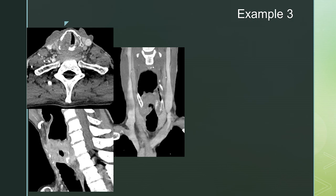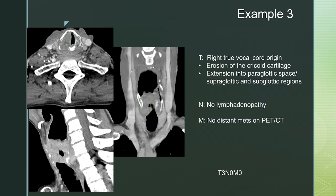Example three is a less subtle lesion. There is a right true vocal cord mass encompassing the entire right true vocal cord. The left true vocal cord appears spared, but there is erosion of the cricoid cartilage posteriorly and loss of the paraglottic fat. On the sagittal view, this is a bulky lesion extending supraglottic as well as infraglottic below the level of the cricoid. On the coronal, it almost has a U shape. This mass originates in the right true vocal cord with erosion of the cricoid cartilage, extension into the paraglottic space, supraglottic and subglottic regions, but no lymphadenopathy and no distant mets — staging as T3N0M0.